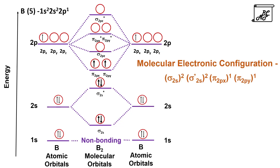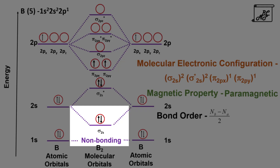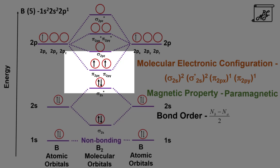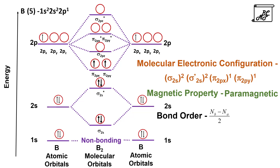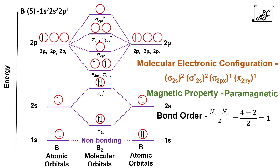The molecular electronic configuration is sigma 2s², sigma star 2s², pi 2px¹, pi 2py¹. As there are 2 unpaired electrons, boron is paramagnetic in nature. The bond order is calculated as (number of electrons in bonding molecular orbitals minus number in antibonding molecular orbitals) divided by 2. There are 4 bonding electrons (2 in sigma 2s and 2 in pi 2px/pi 2py) and 2 antibonding electrons (sigma star 2s), giving a bond order of 1. That is how boron is diatomic with one bond between the two boron atoms.